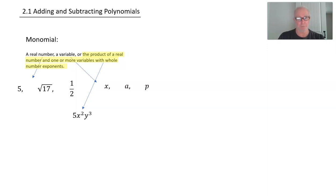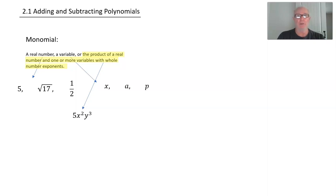We have the real number 5 and then the variables. Now the variables' exponents have to be whole numbers. So no rational numbers, no fractions, no negative exponents, no irrational numbers like square roots. Only whole numbers can be the exponents.